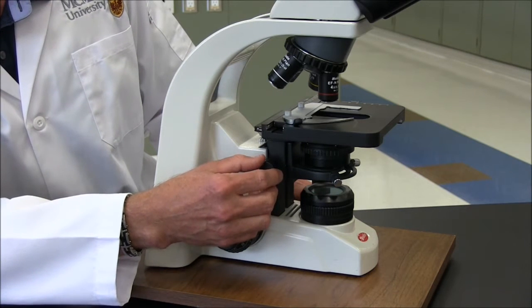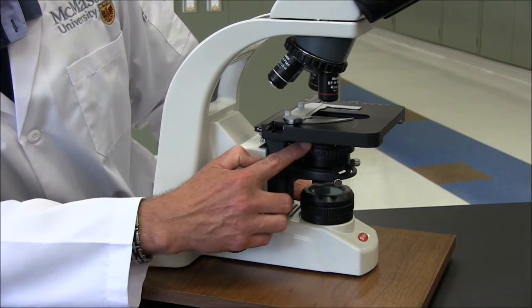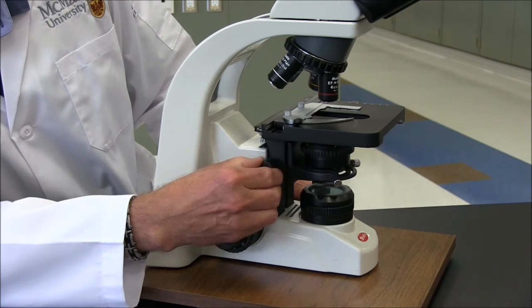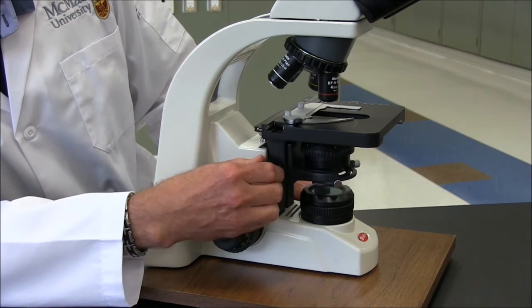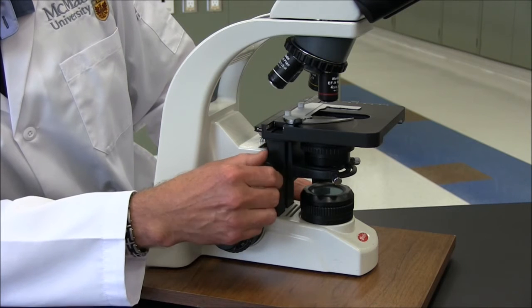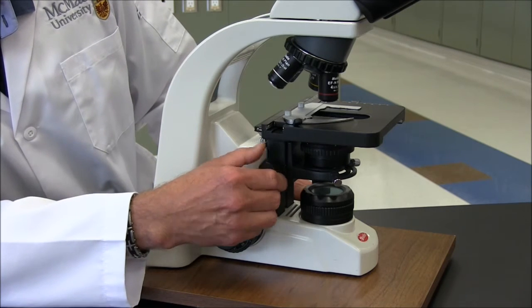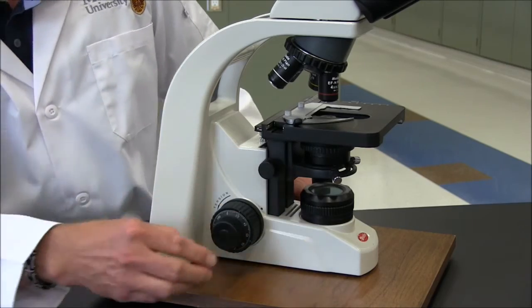The other knob here is the condenser focus knob. The condenser is located underneath the stage, and this knob moves it up and down. This is part of the Kohler illumination process, which we're not going to be discussing in this video. So normally this will be set for you, and you don't have to touch it.